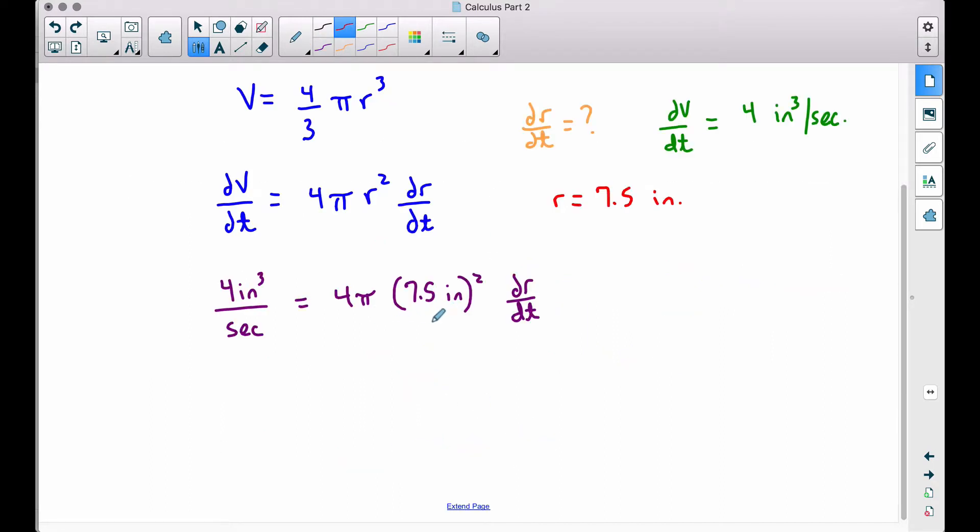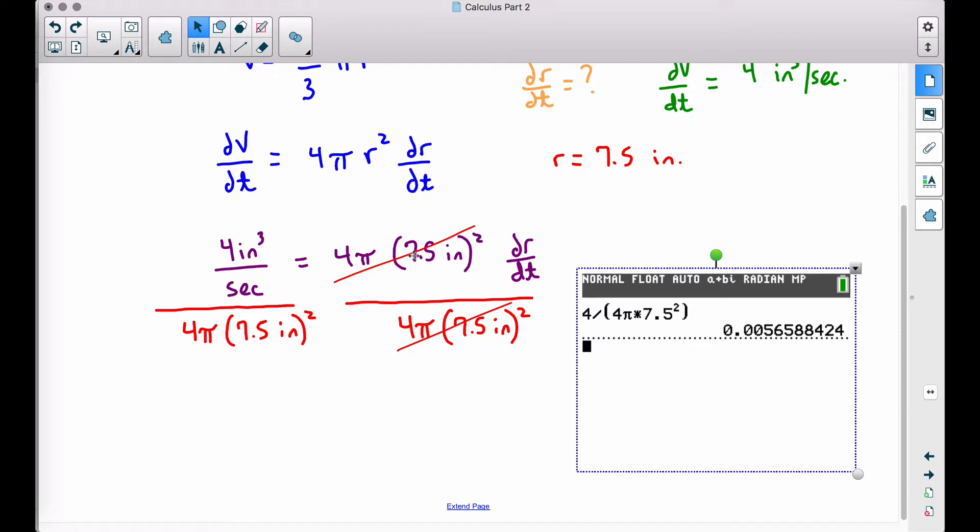Now I don't want to round anything yet, I want to round my final answer. So what we can do here, since we're trying to find dr/dt, and since these things are getting multiplied by dr/dt, we can divide by all of this stuff on both sides to get dr/dt by itself.